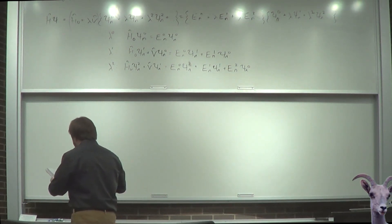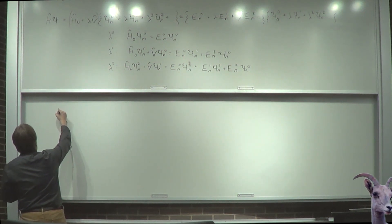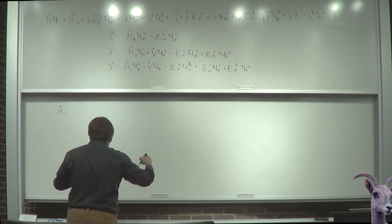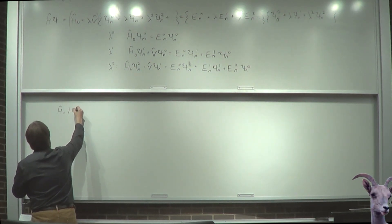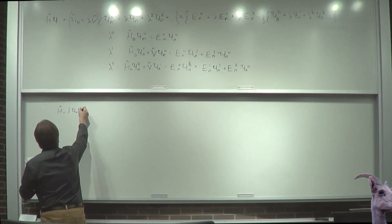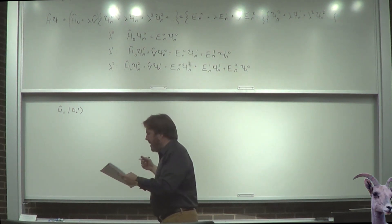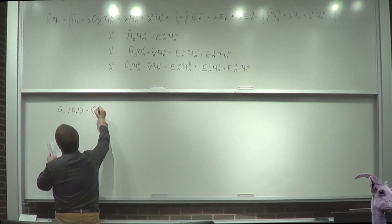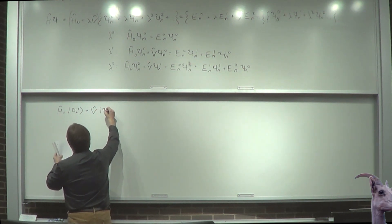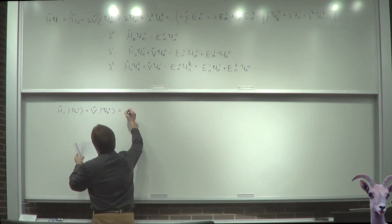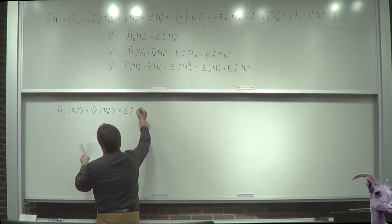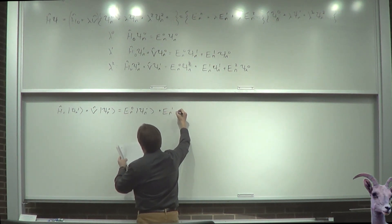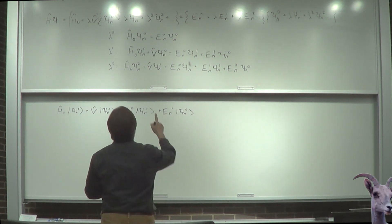I'm going to switch to bra-ket notation for the first-order derivation. The supplemental handout doesn't use this notation, but it's straightforward to follow — I'm just writing the wave function as a ket, which becomes a wave function by application of a positional bra or by resolving an identity in space. I'd contend that bra-ket notation makes this slightly easier than the traditional approach — that's the whole point of Dirac notation.